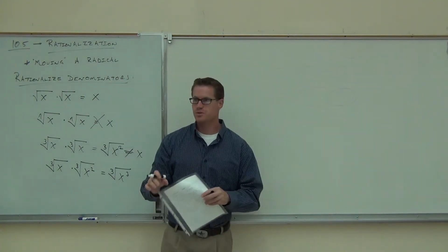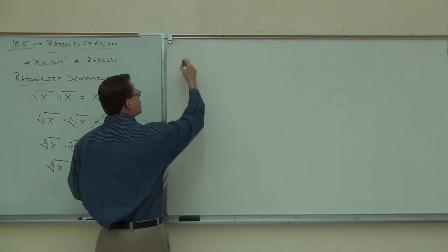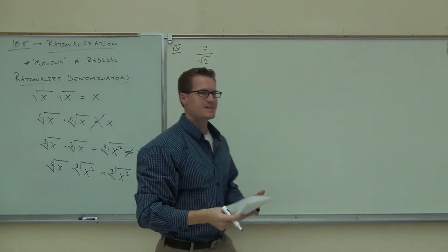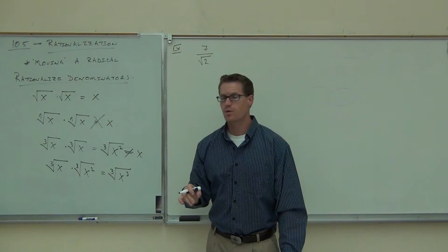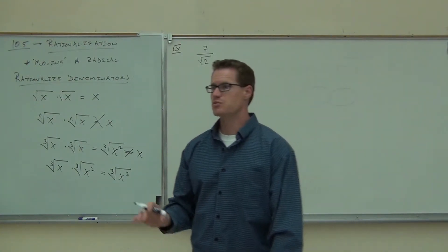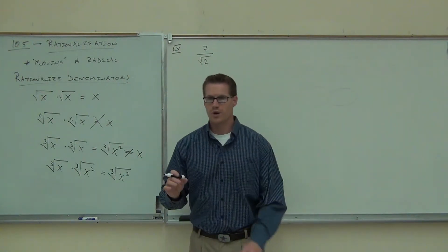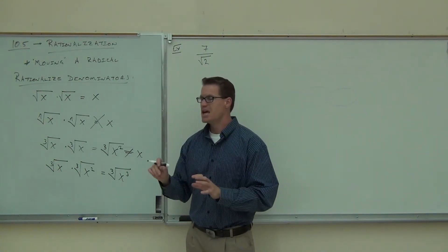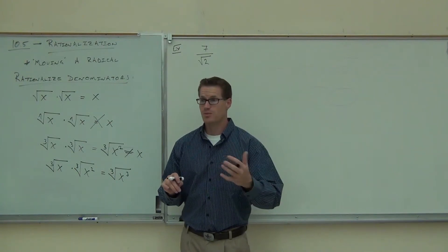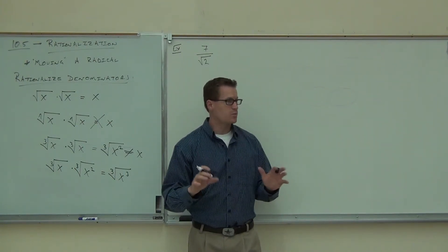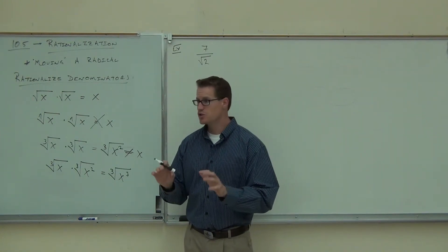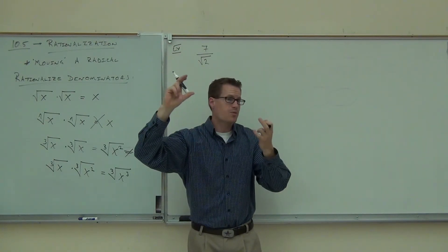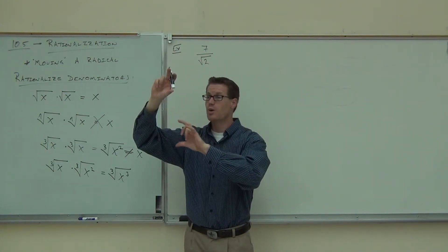We're going to start off nice and simple — just some numbers — and gradually move on to things with variables. Rationalize the denominator means get the square root, or whatever root you have, off the bottom of the fraction. If I say rationalize the denominator, it means get the radical off the bottom. If I say rationalize the numerator, it means get the radical off the top. You need to read these problems correctly, because you'll have problems where you have roots on both the top and the bottom.